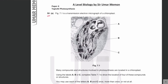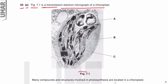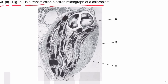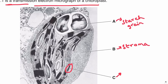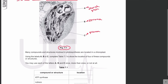Question 50 part A: figure 7.1 is a transmission electron micrograph of a chloroplast. In this photograph taken from an electron microscope, A is the starch grain, B is the stroma of the chloroplast — that is the ground substance — and C is the granum, which consists of thylakoids and thylakoid membranes.